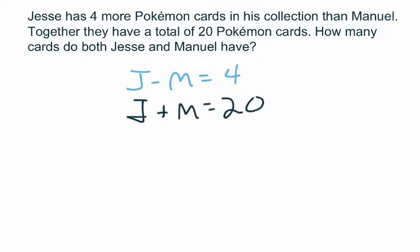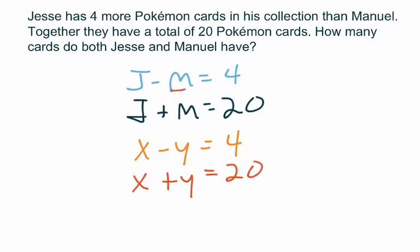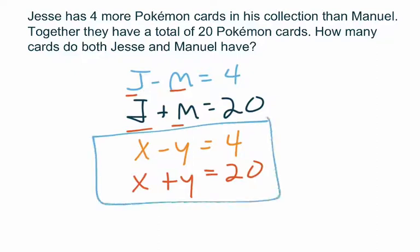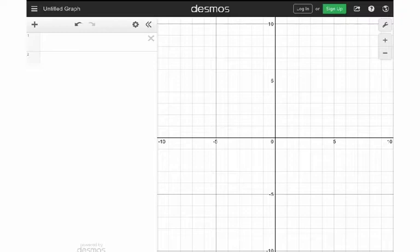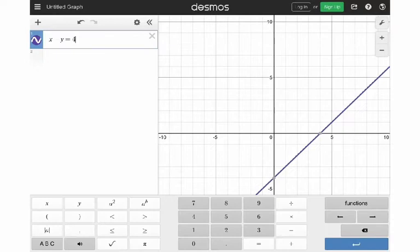Now let's reassign the variables. I could have done that at the beginning, but since we're going to solve, I'll write this as X minus Y equals 4 — using X for Jesse's value and Y for Manuel's. Then the second equation is X plus Y equals 20. I simply changed out the variables. Now that we have the system of equations, I can go back into Desmos.